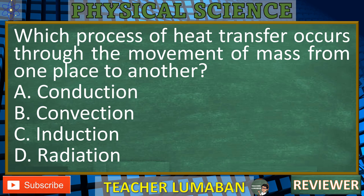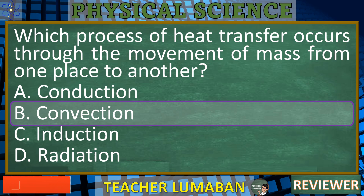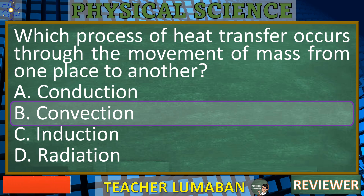The process of heat transfer that occurs through the movement of mass from one place to another is B. Convection. Convection involves the transfer of heat by the physical movement of fluid, which can be either liquid or gas. When a fluid is heated, it becomes less dense and rises, while cooler, denser fluid sinks, creating a circulation pattern that transfers heat. This process is common in atmospheric and oceanic phenomena, as well as in heating systems and boiling water.